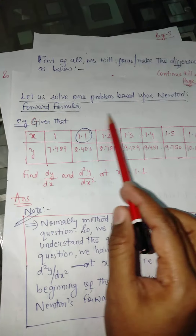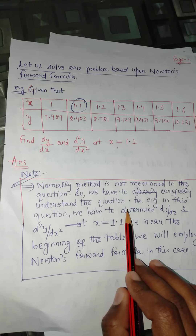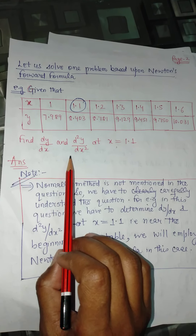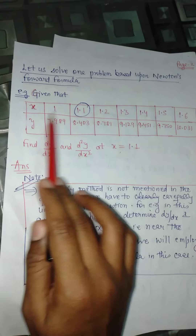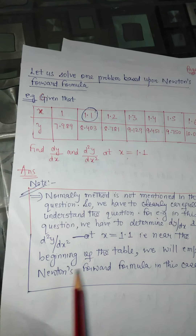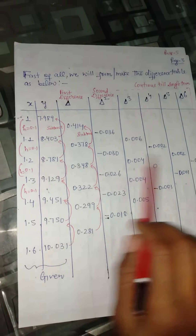Let us solve one example using this formula. Suppose this table of tabulated values is given to us and we need to find dy/dx and the double derivative at the point x = 1.1. Normally the method to use is not mentioned in the question, so we have to carefully understand. Since the value x = 1.1 lies near the beginning of the table, we will use the Newton forward interpolation formula in this case.